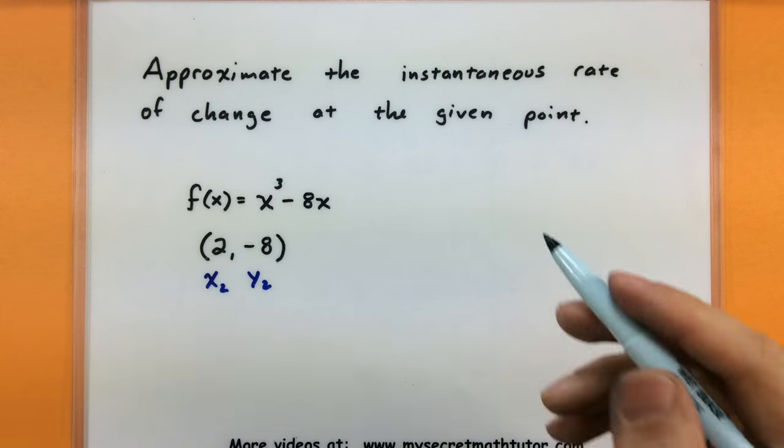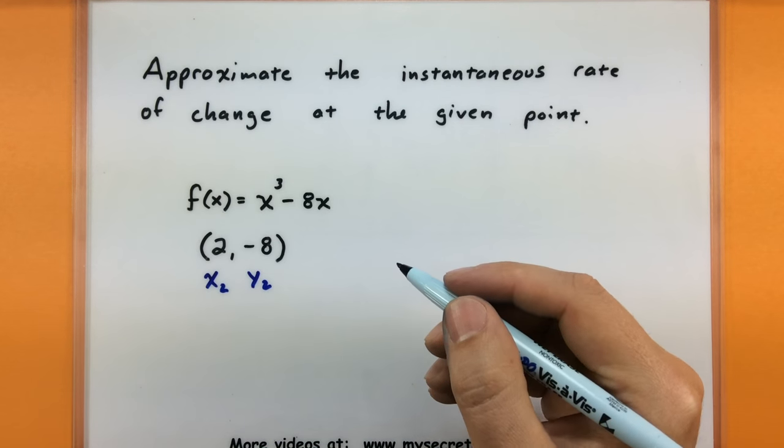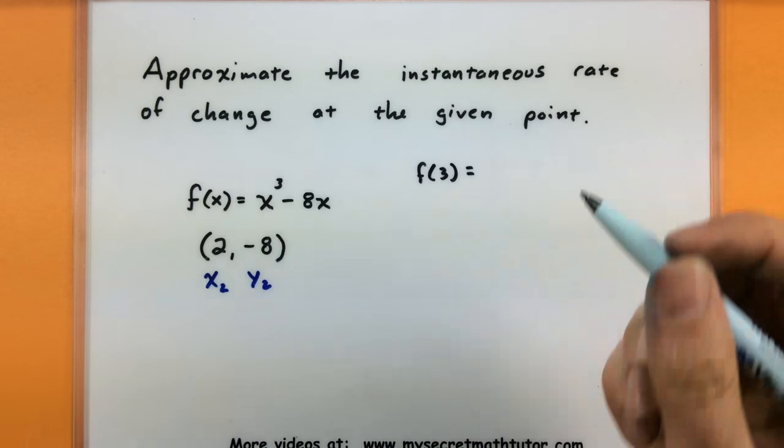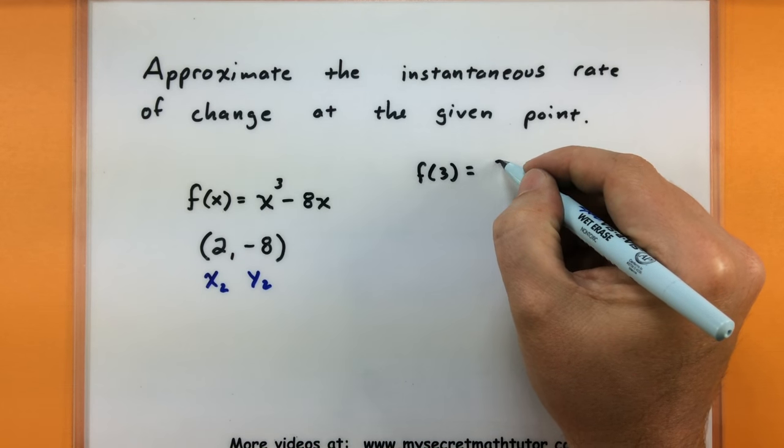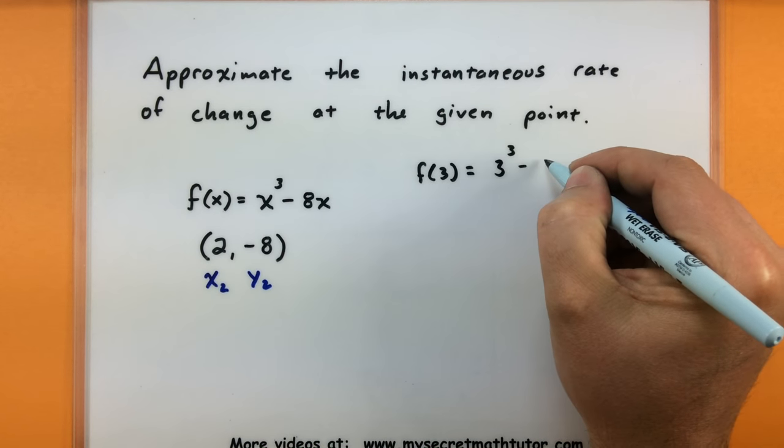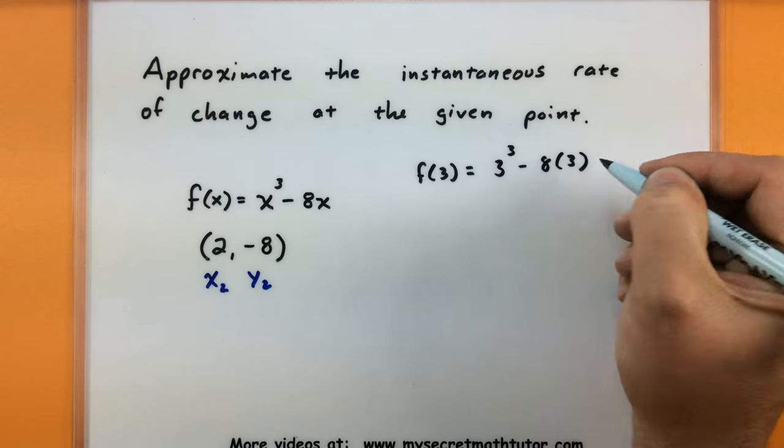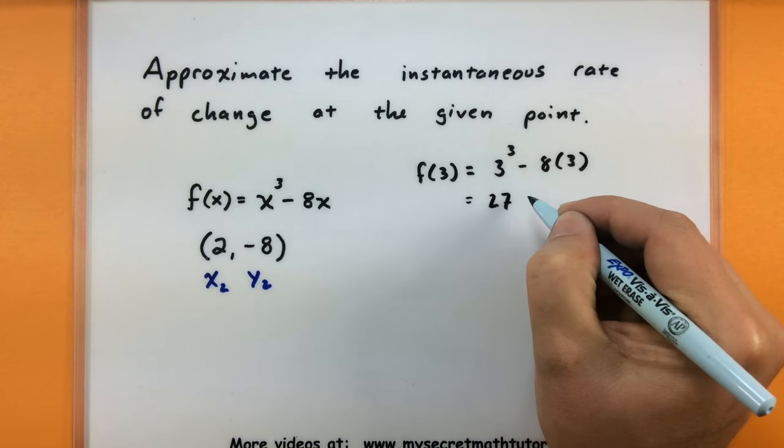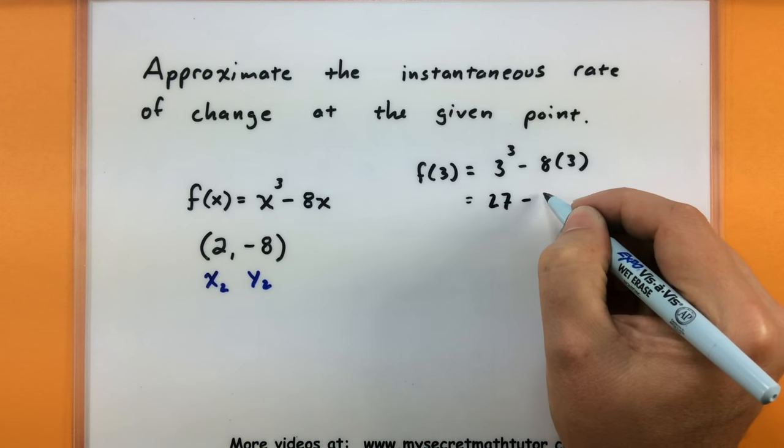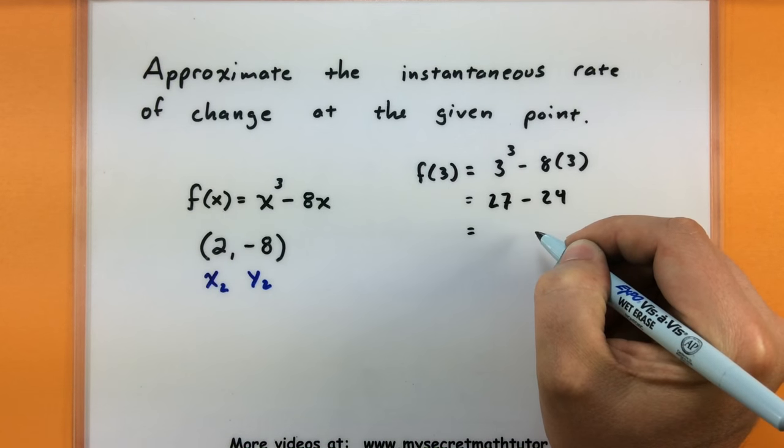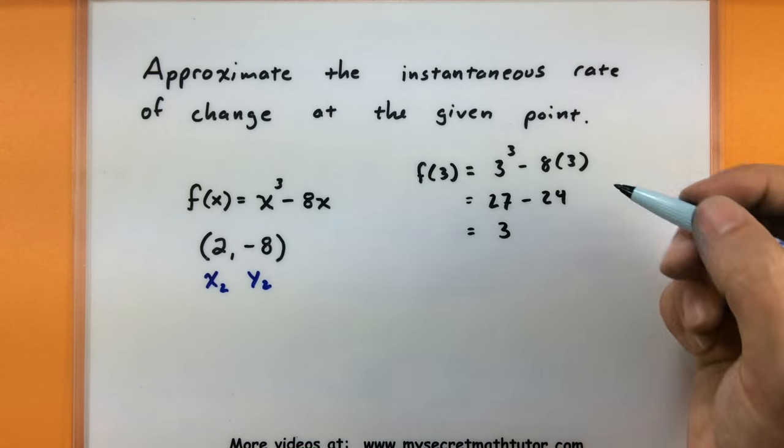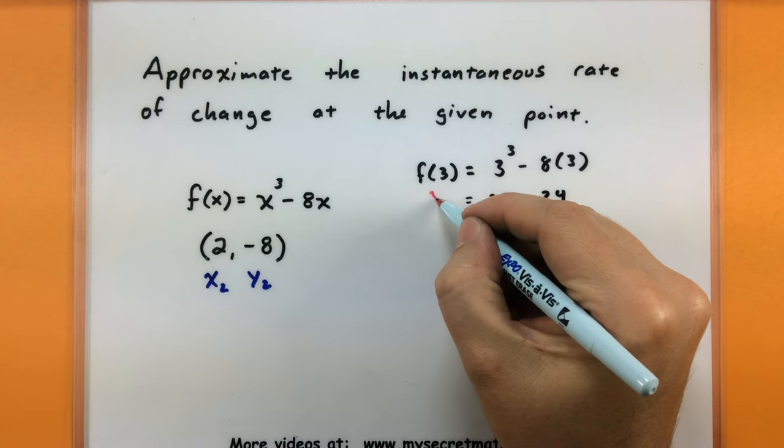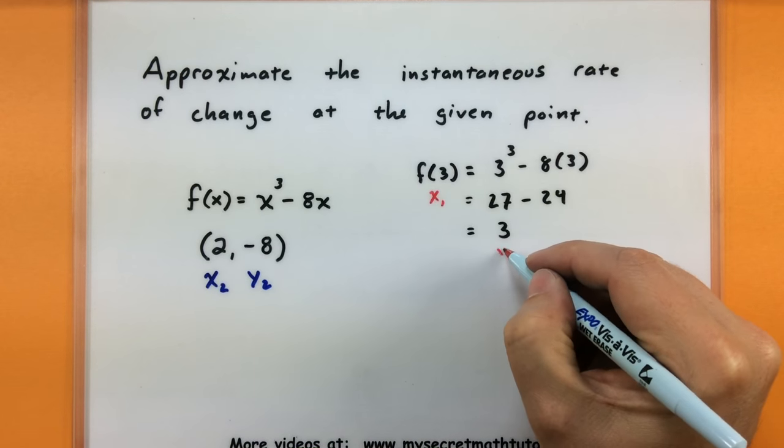Let's go ahead and choose another point. Let's see what happens if we use 3. So definitely not the same point. I'm going to plug it into the function. That way we can see what our given y value is for it. Let's see, 3 cubed is 27. 8 times 3 is 24. So this would give us a value of 3. So we can use that as another x value and another y value.